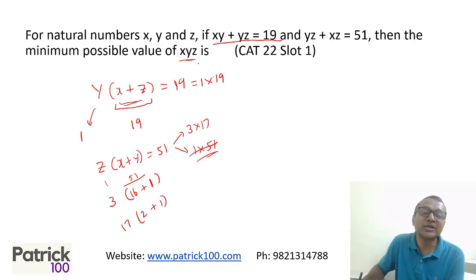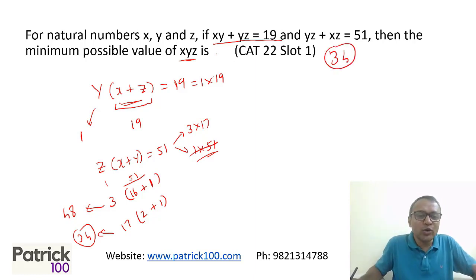Two cases, Z can be 3, in which case X and Y will be 17. X and Y will be 17. You already know Y is 1. So X will be 16. So 3 into 17 is 51. Or Z is 17, X plus Y is 3, which X is 2, Y is 1. Now I want X into Y into Z. If I take the first case, X into Y into Z, 1 into 16, 3 is 48. Second case, it is 34. Since I want minimum value, minimum value is 34. That is the answer. So what did I do here? I just substitute a value that was possible. I didn't use great equation. I didn't do anything as such. Just substitute whatever possible values. I got the answer.